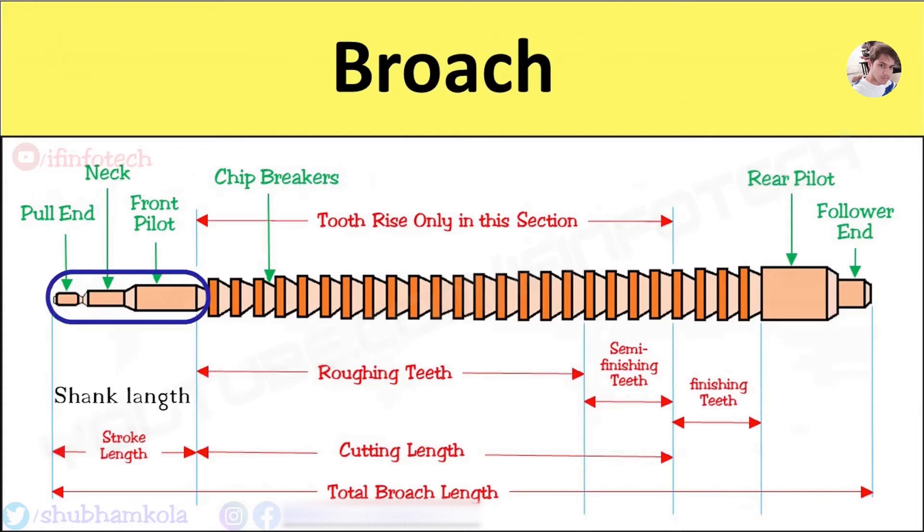The shank length is the length to pass from the workpiece and attach the puller before roughing teeth engage with the workpiece. Roughing teeth remove major material whereas semi-finished teeth provide smoothness while cutting.